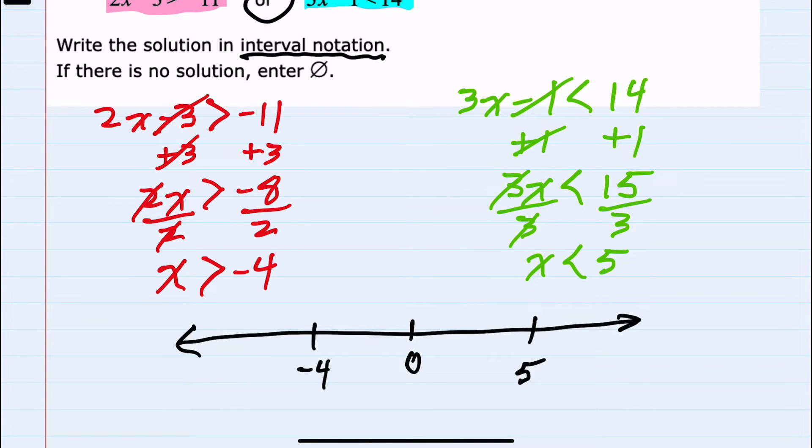The inequality on the left says x is greater than negative 4. So this would be everything, not including negative 4, but everything bigger than negative 4. The inequality on the right says that x is less than 5. So not equal to 5, but everything smaller than 5.